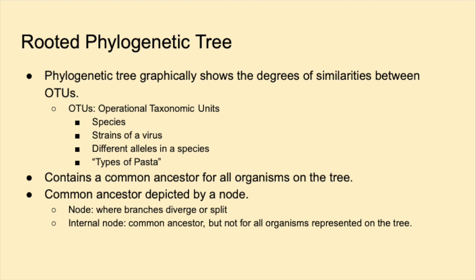A rooted tree has a common ancestor for all organisms. The common ancestor is depicted by a node, or where branches diverge or split. Internal nodes are all common ancestors, but they are not for all organisms represented on the tree.